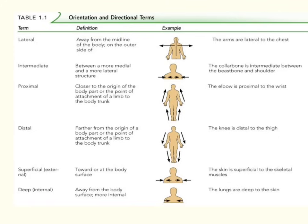Proximal and distal are the two that are the most difficult for students to understand. Proximal means closest to the point of attachment, and in the human body the point of attachment is the trunk. When we work with proximal and distal, we are usually talking about the extremities — the arms and legs — where the trunk, specifically the shoulder or the hips, would be the point of attachment. Distal means further from the point of attachment.